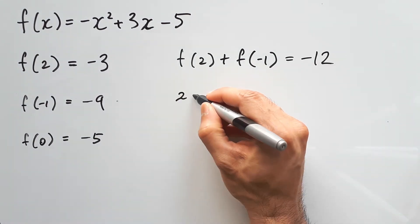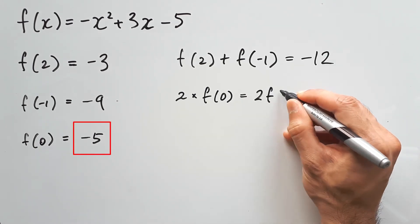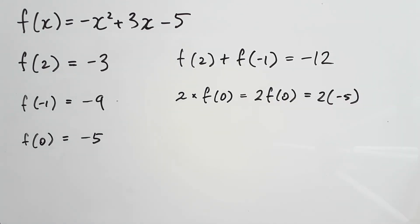So how about 2 times f of 0? Or 2 f of 0. Means the same thing. f of 0 is negative 5. So all we need to do is replace that bit for negative 5 and multiply by 2, giving us negative 10.